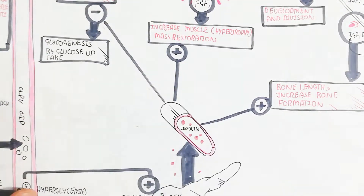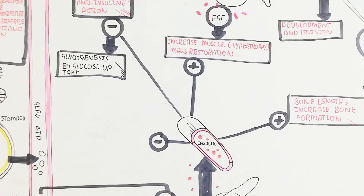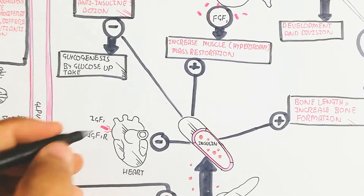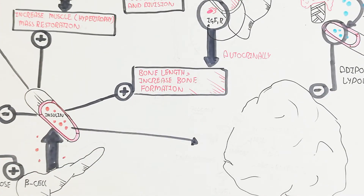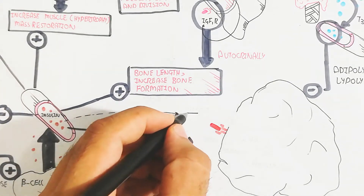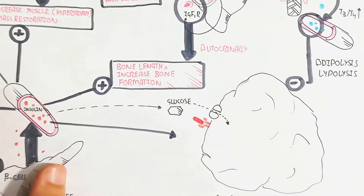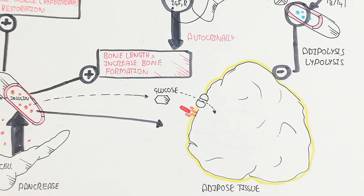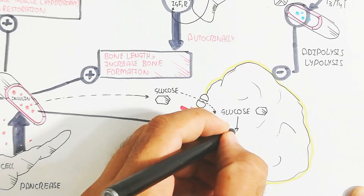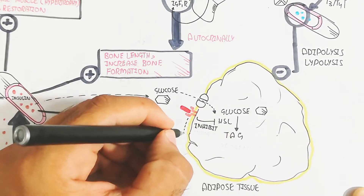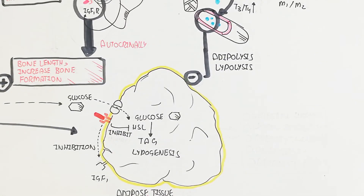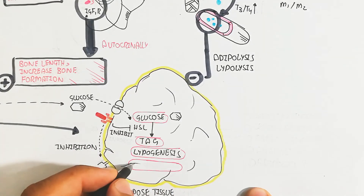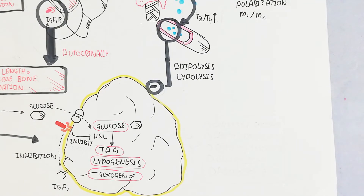During the fed state, bone length increase and bone formation continue with similar function. Insulin inhibits heart hypertrophy. In adipose tissue, the insulin receptor binds insulin, activating the GLUT channel for glucose influx. That glucose is converted into triacylglycerol through inhibition of hormone-sensitive lipase by insulin. IGF-1 receptor inhibition also leads to some lipogenesis and glycogen formation.